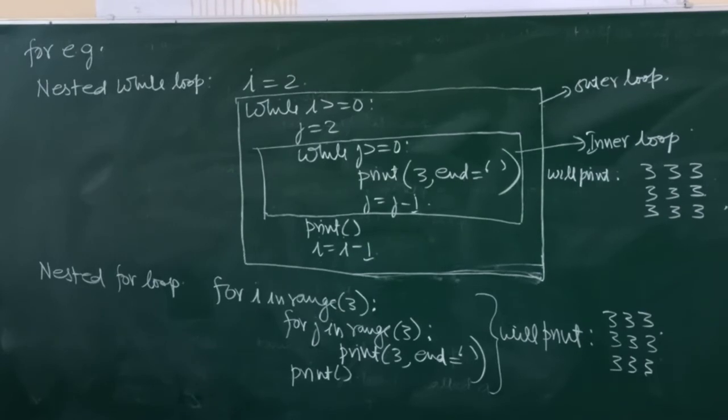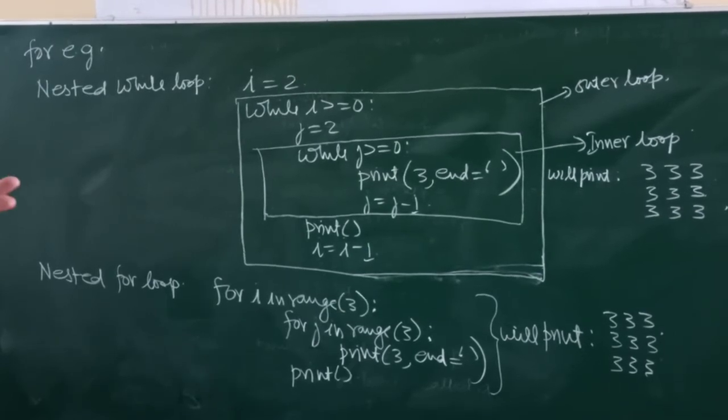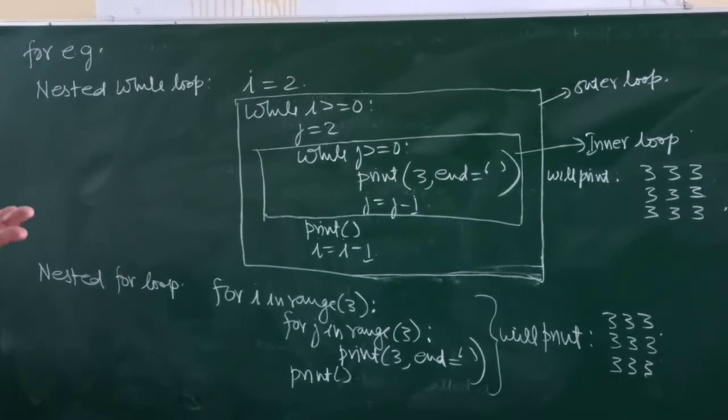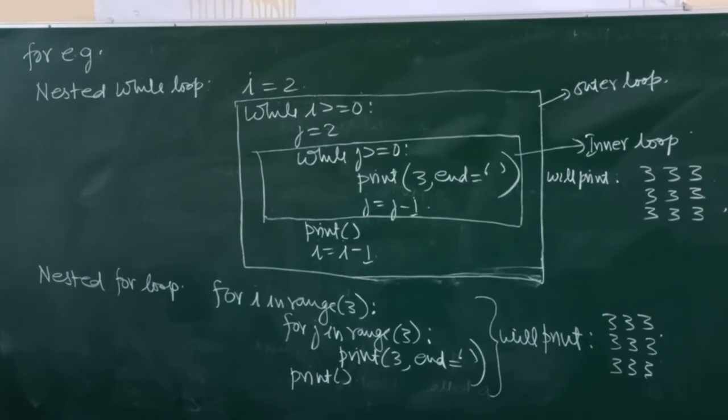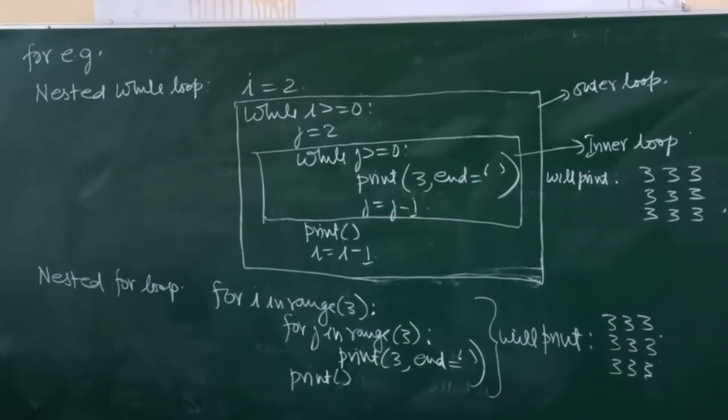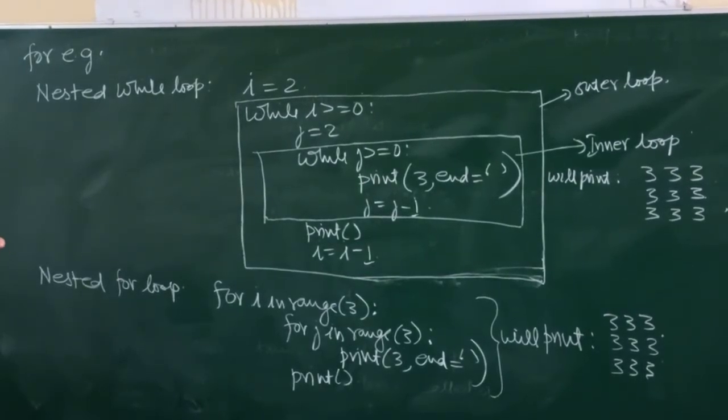It will give this output as 3, 3, 3 in the first line, 3, 3, 3 in the second line, 3, 3, 3 in the third line.